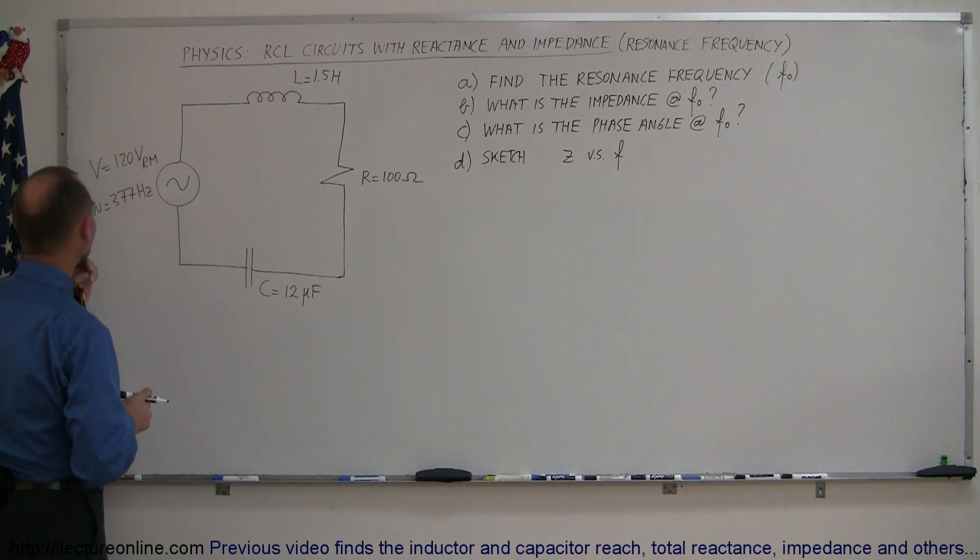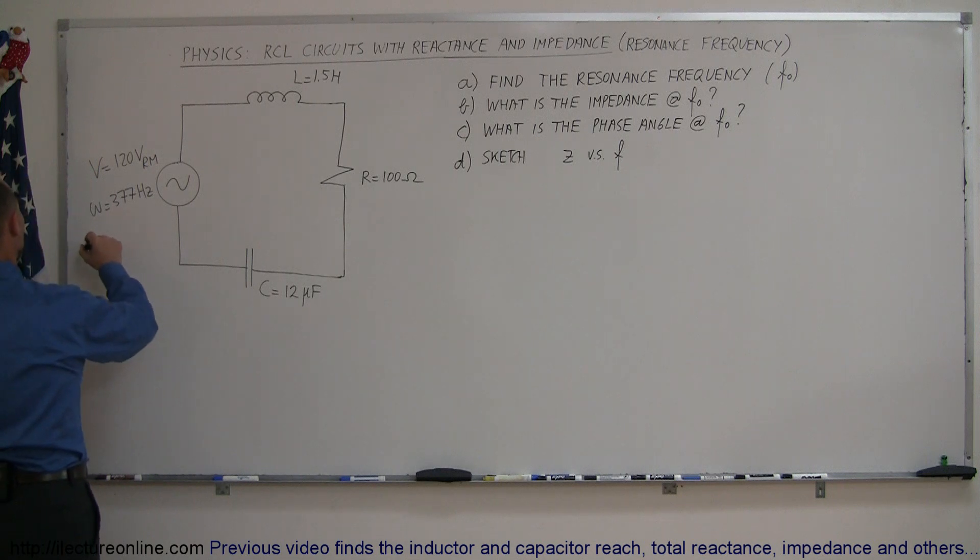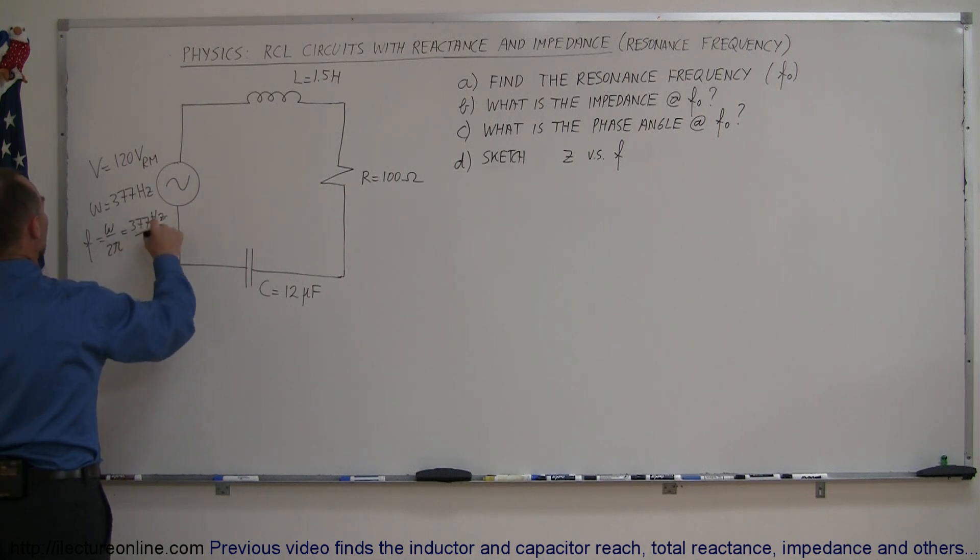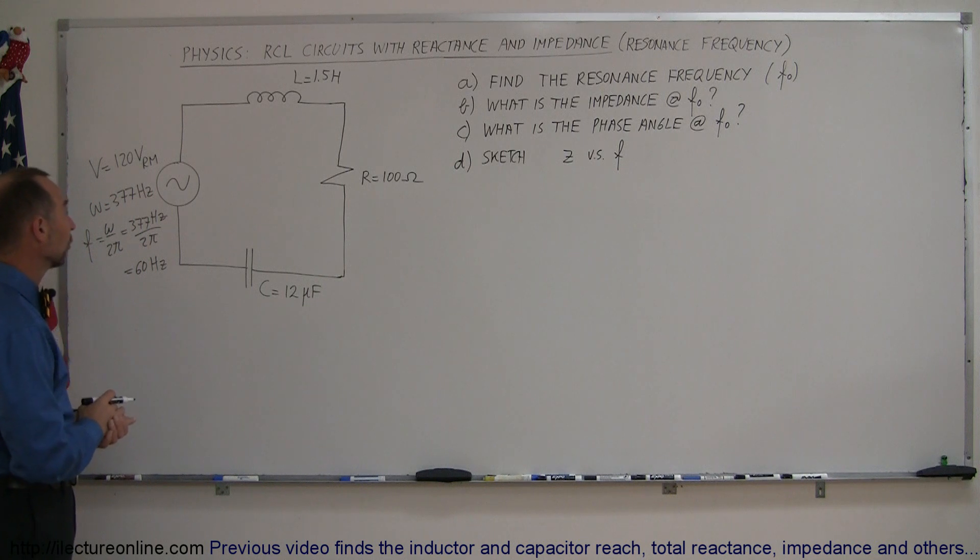First of all, we have a voltage varying source right here. It varies with the angle of frequency of 377 Hertz, and if you convert that to the frequency, that is equal to omega divided by 2π, which is equal to 377 Hertz divided by 2π, which ends up being 60 Hertz. So that's the oscillation frequency of that voltage source.